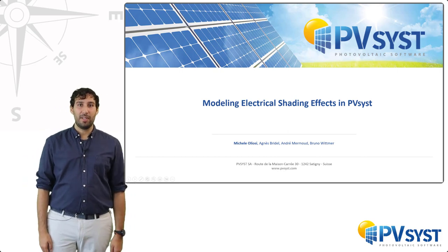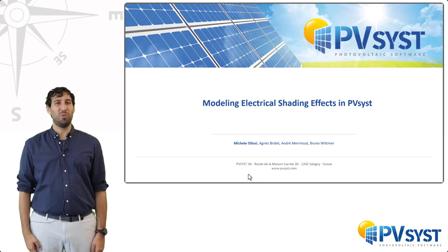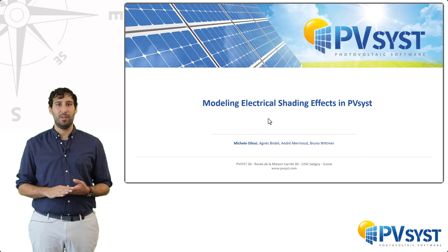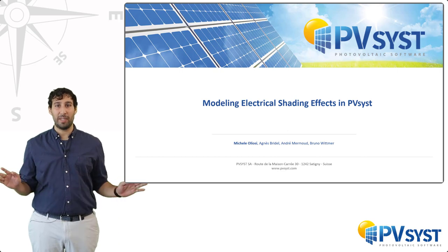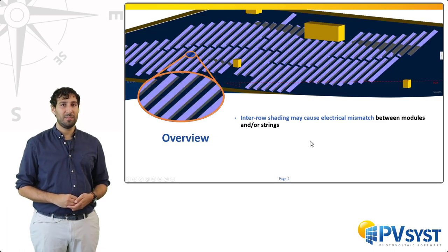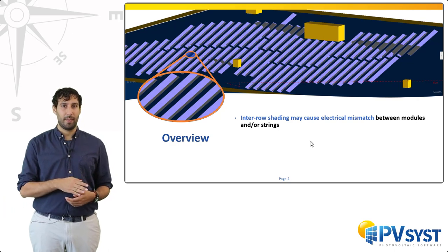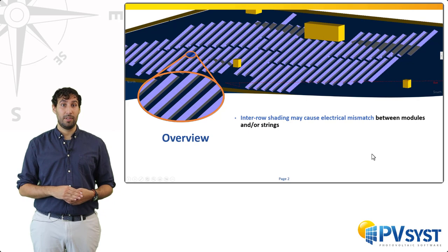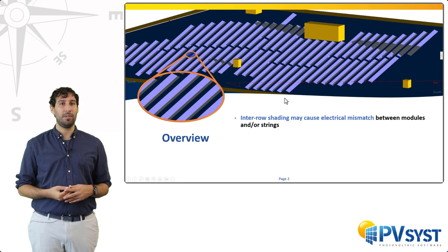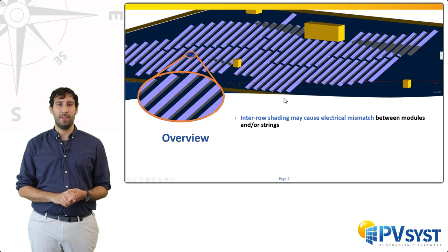In this presentation, I will discuss the electrical shading effects of inter-row shadings. Most of the discussion won't be new to you; however, we were interested in putting things into a broader perspective, and especially into the perspective of modeling. As you may know, shadings will cause electrical mismatch between submodules, modules and strings. The amount largely depends on the layout and connections of your system, but overall, you should always expect some extra loss from this electrical mismatch. I will highlight the most prominent cases, always in the context of regular inter-row shadings.